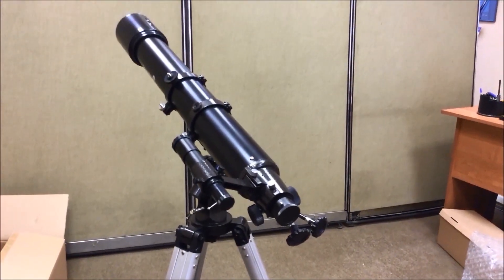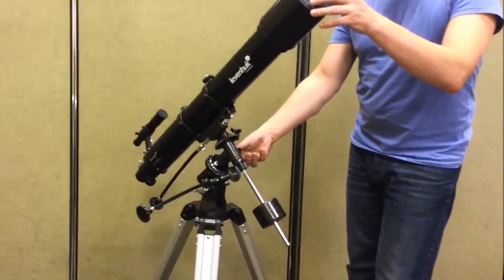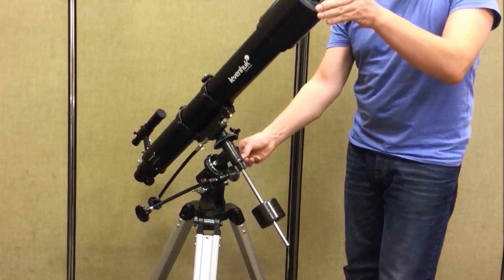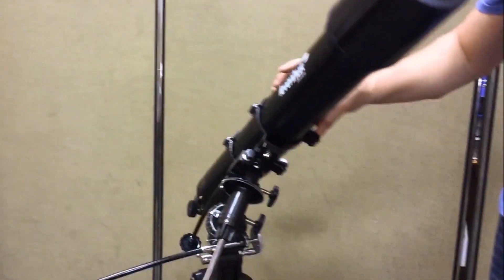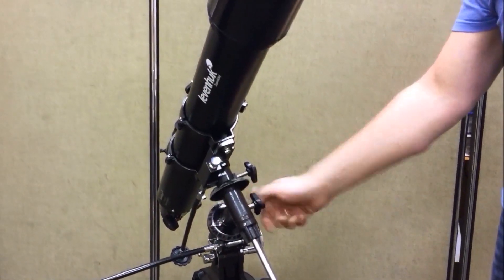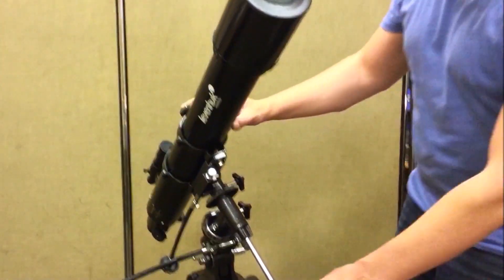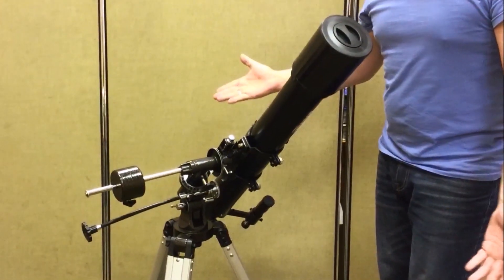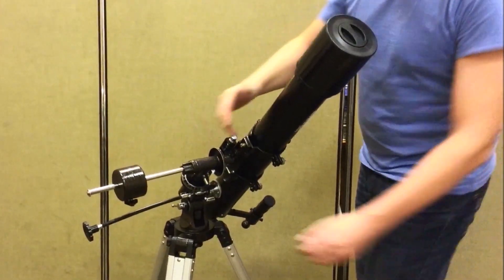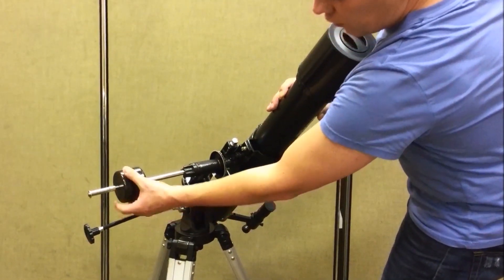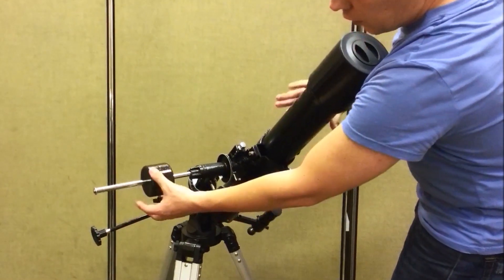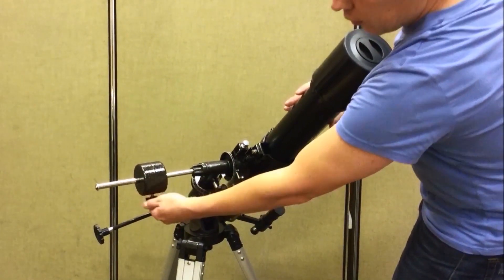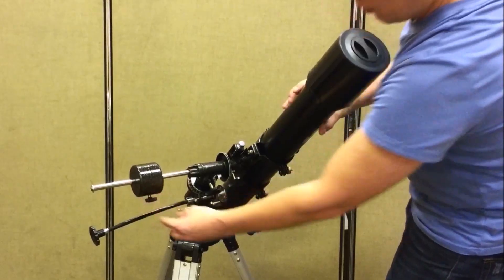Now it's time to balance the telescope. For this, we slowly unlock the declination axis lock knob. Make sure that the telescope is steady in any position. If not, carefully loosen the counterweight screw and move the counterweight along the counterweight rod until the telescope is balanced. Then tighten the screw securely.